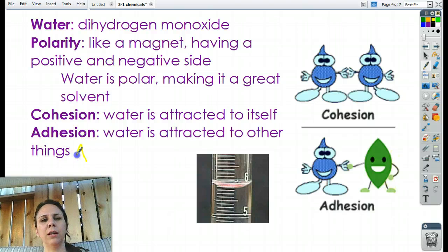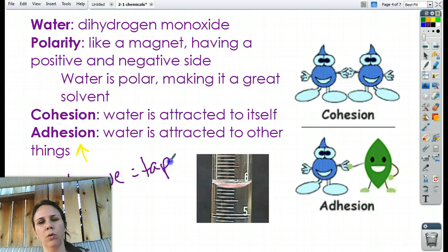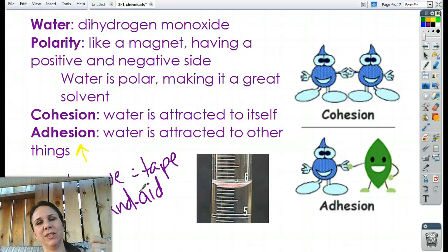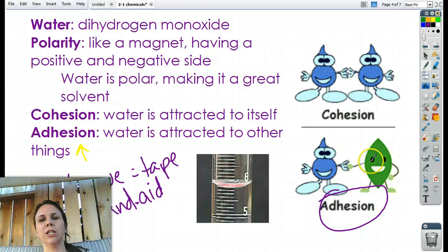Here's another way of thinking of adhesion, is an adhesive is something like tape or band-aids. So, if you look at a band-aid box, it'll say adhesives on there. So, tape and band-aids are sticky, right? And they stick to other things. Tape sticks to your skin. Tape sticks to paper. So, that's how you can remember adhesion, is that you stick to other things.